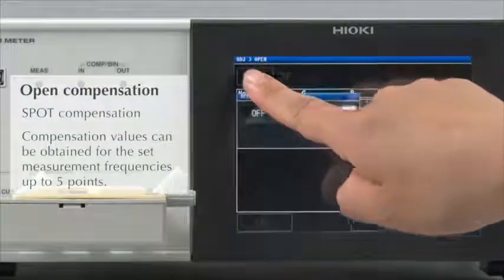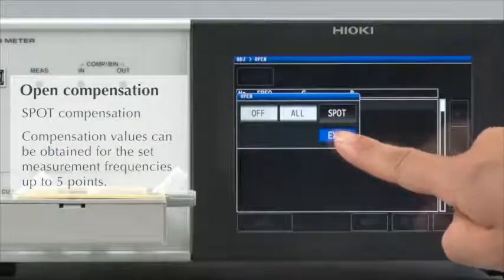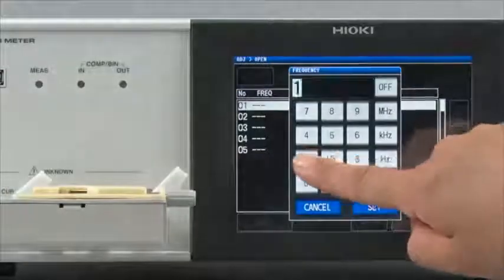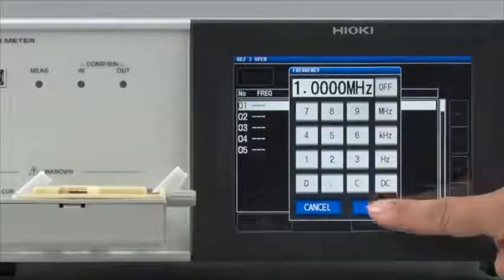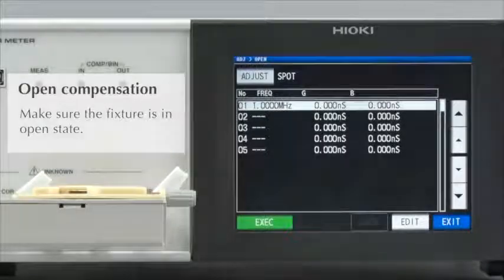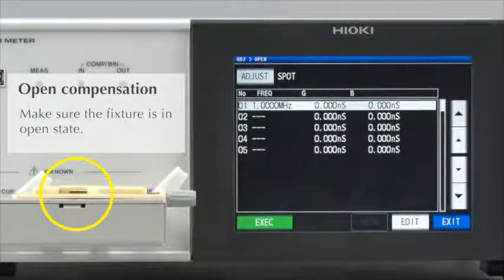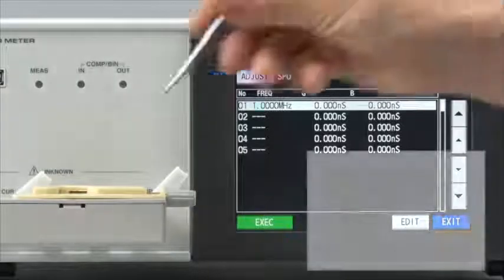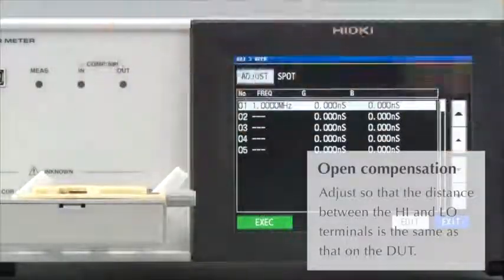Since we are only measuring at 1 MHz this time, spot compensation is sufficient. Set at 1 MHz. Adjust the fixture so that it is in open condition. Temporarily place the component being measured on the fixture.